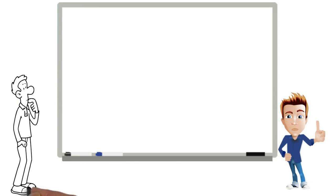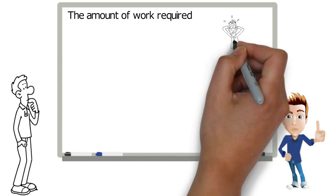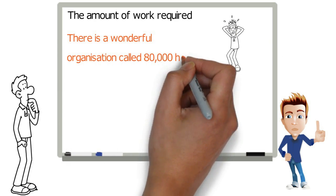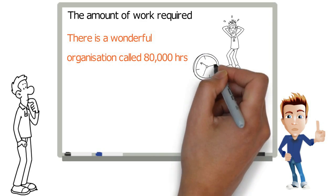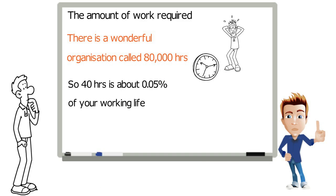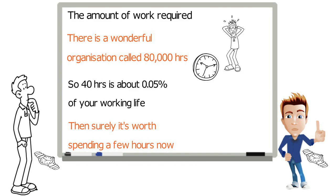Those were reasonable. So let's start with the amount of work required. Firstly, it is likely to be more work or a much worse result if you don't have a strategy. Secondly, there is a wonderful organization called 80,000 hours which you should definitely explore. The reason it is called 80,000 hours is because it is estimated that's roughly the number of hours we will work. So, 40 hours is about 0.05% of your working life. My time with you and time taken to do the exercises will probably be a few hours at most. Of course, you'll need to invest some more time. But considering that your working life is 80,000 hours, then surely it's worth spending a few hours now. Sam nodded eagerly.